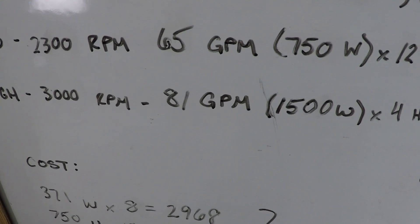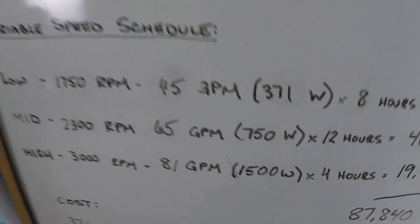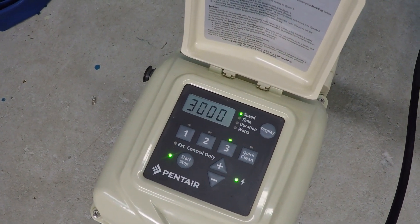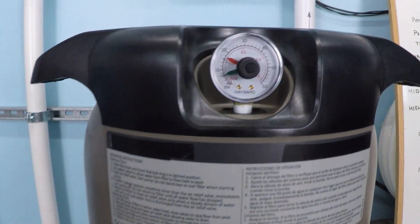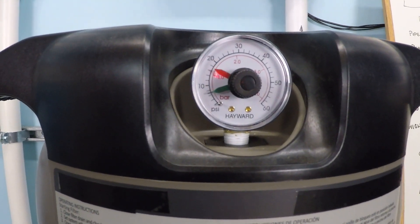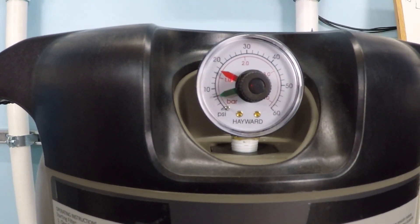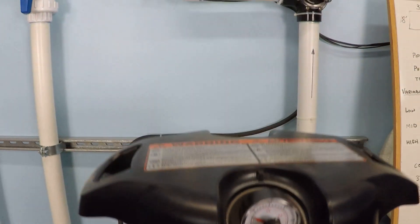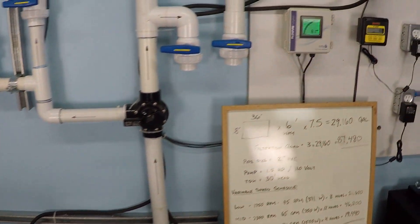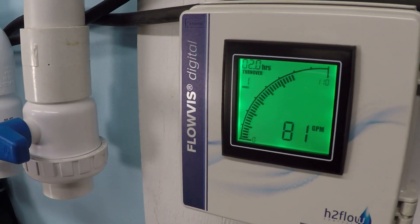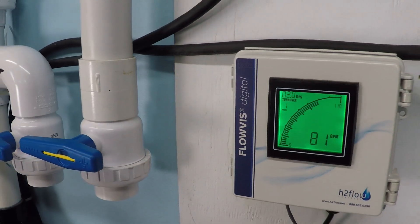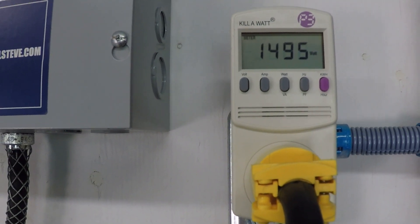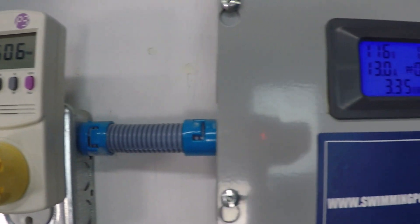Alright, now 3,000 RPM, 81 gallons per minute, 1,500 watts of power consumption. Let's take a look at the pressure gauge here. I see that as about 7. Not sure how clearly you can read that, but I read that as about 7 PSI. 81 gallons per minute, 1,500 watts, 1.5 kilowatts.